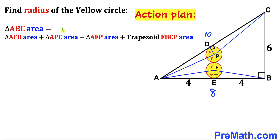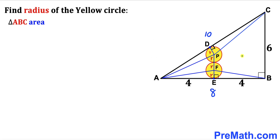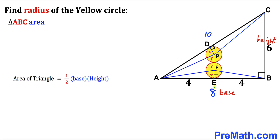The area of triangle ABC equals the area of triangle APB, plus triangle APC, plus triangle AFB, plus the area of trapezoid FBCP. Let's first calculate the area of the big right triangle ABC using the formula: area equals one-half times base times height. Our base is 8 and our height is 6, so the area of triangle ABC is one-half times 8 times 6, which gives us 24 square units.